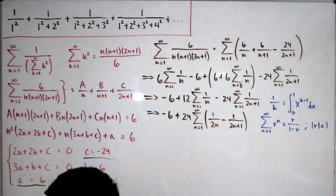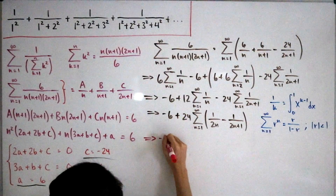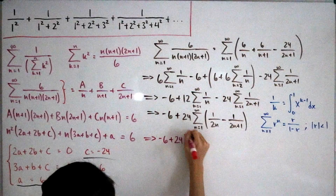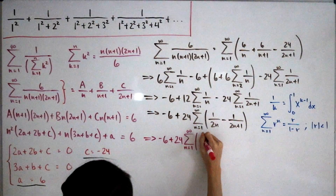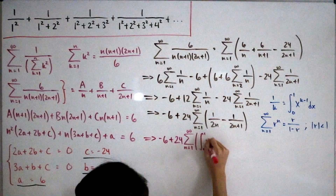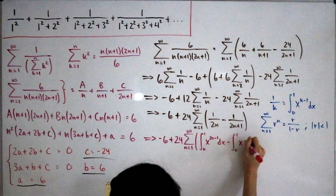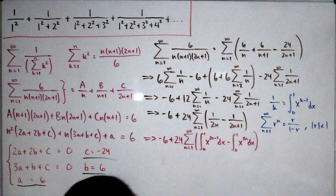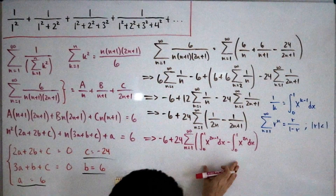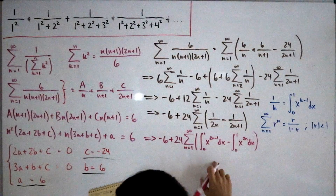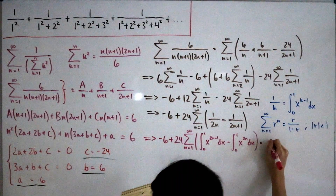Converting everything into integrals: 1/(2n) becomes ∫₀¹ x^(2n−1) dx and 1/(2n+1) becomes ∫₀¹ x^(2n) dx. By linearity and the interchange of sum and integral (justified by convergence), we can apply the geometric series to sum over n, yielding integral expressions.